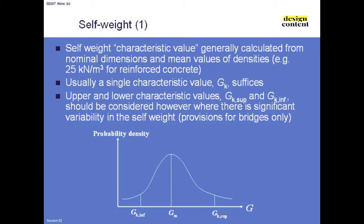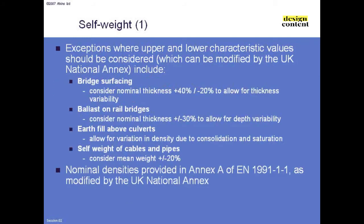There are exceptions where loading has very marked variability — for example, surfacing, where you have little control over thickness throughout the structure's lifetime. In these cases, Eurocode requires you to consider an upper and lower bound value. For bridge surfacing, you must consider 40% more than the drawing value and 20% less. The load factor itself is no different from other dead load factors — it's a standard factor but applied to upper and lower bounds rather than a massive factor like 1.75 as previously.